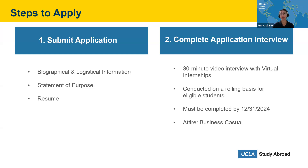The second step of the application process is completing an application interview. Once you submit your application, if you meet the eligibility criteria, you will be invited to complete an application interview with our partner, Virtual Internships. These are conducted on a rolling basis and must be completed by December 31st. In January we will be releasing decisions, so all application requirements must be completed by the end of this year. Failure to complete the application interview will result in your application being withdrawn. The interview is a great chance to elaborate on your statement of purpose, your interests, and your goals for the virtual internship.